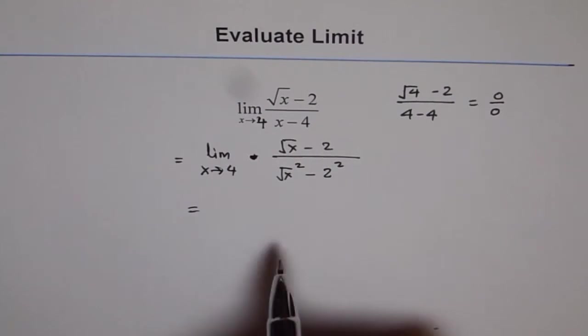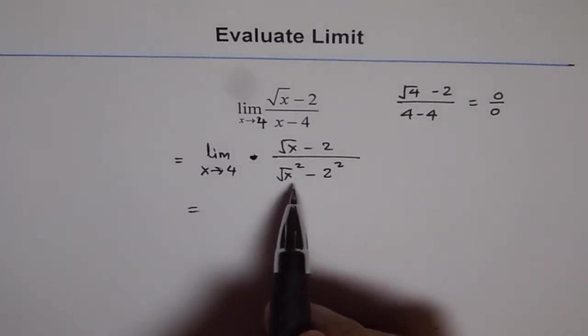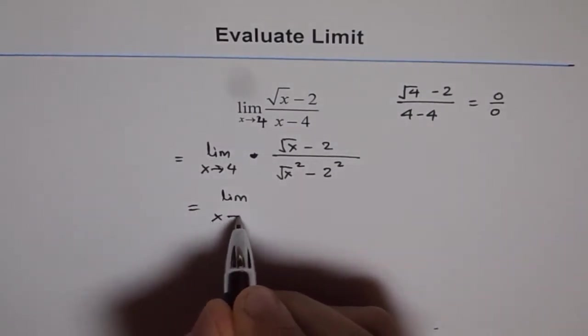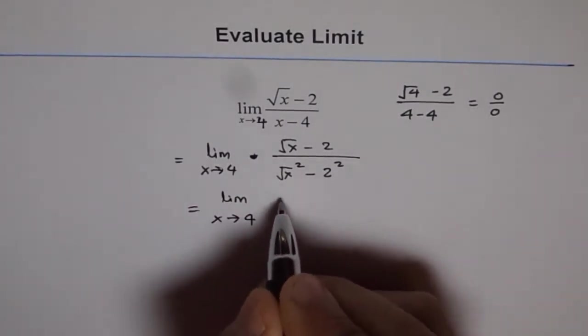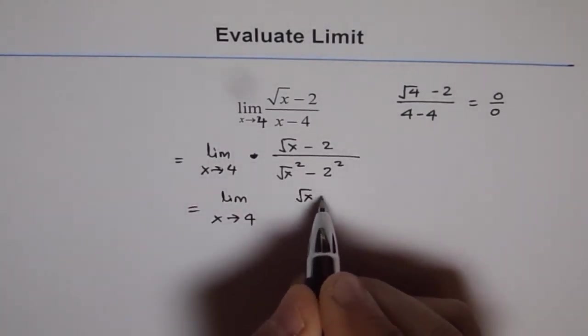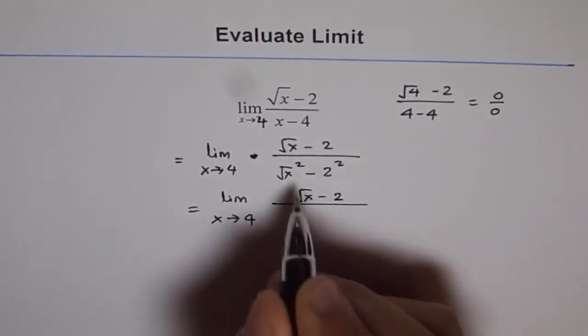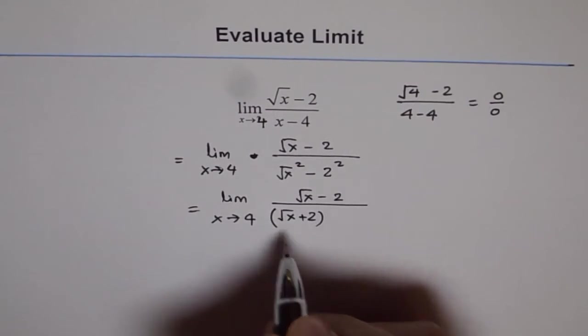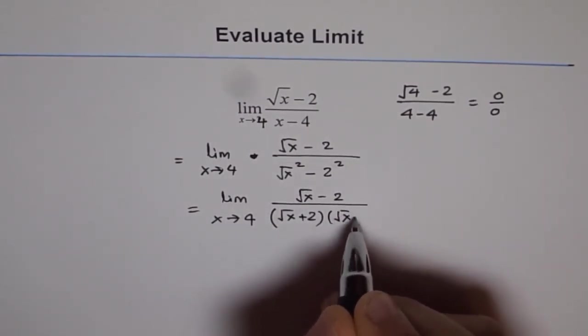So denominator is difference of squares. It could be written as sum and product. So we will do that. We have in the numerator square root x minus 2, and in the denominator we have square root x plus 2 times square root x minus 2.